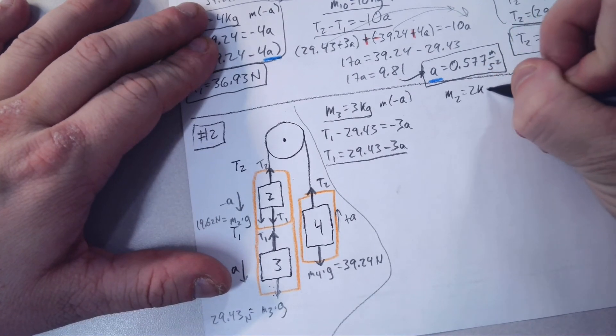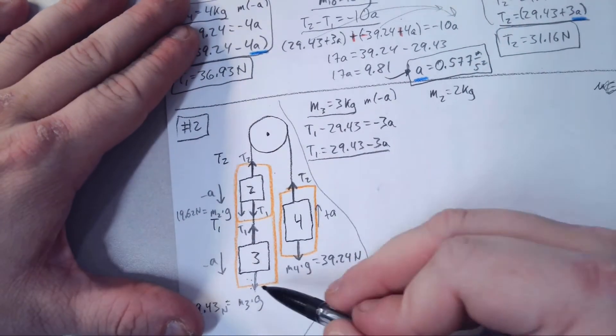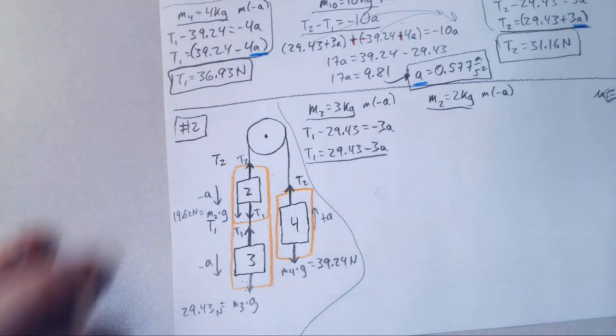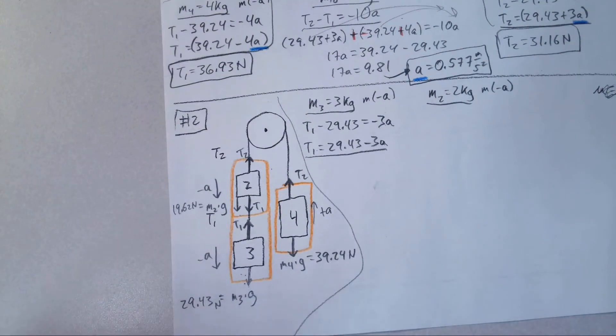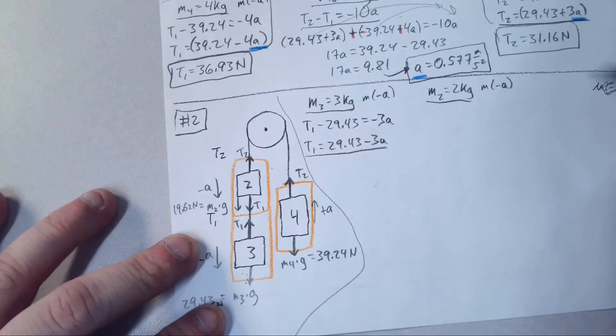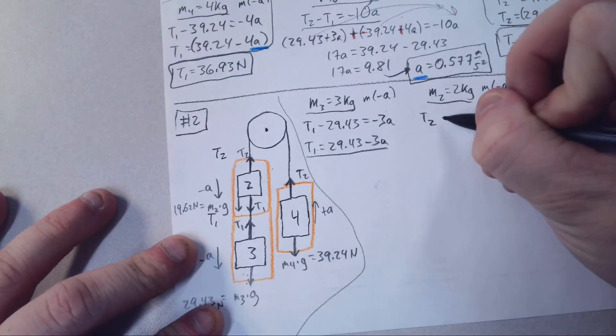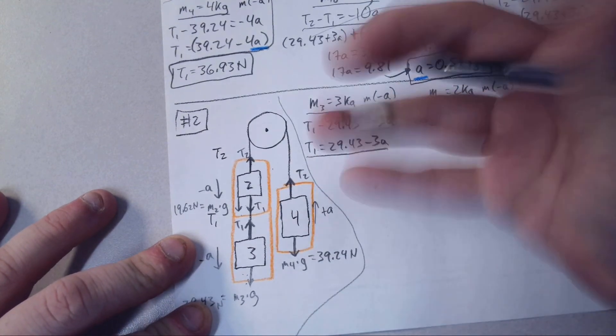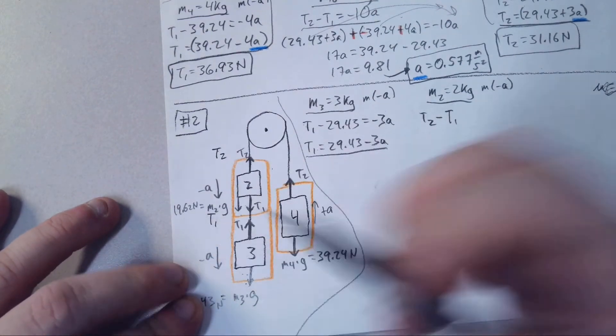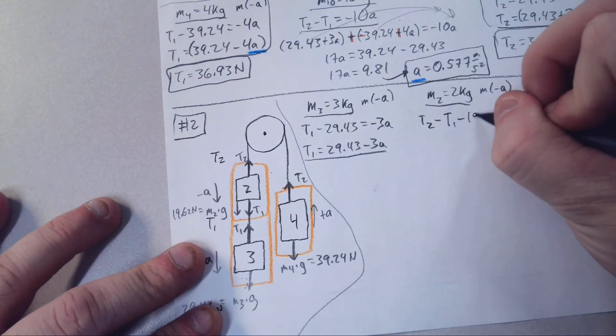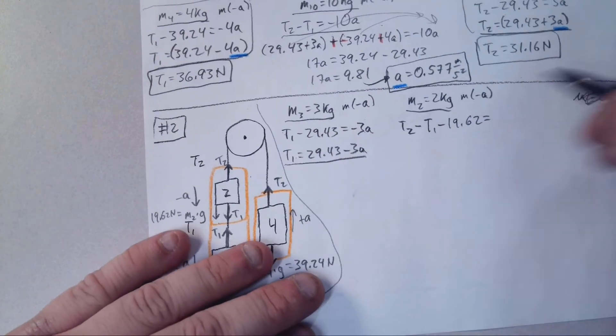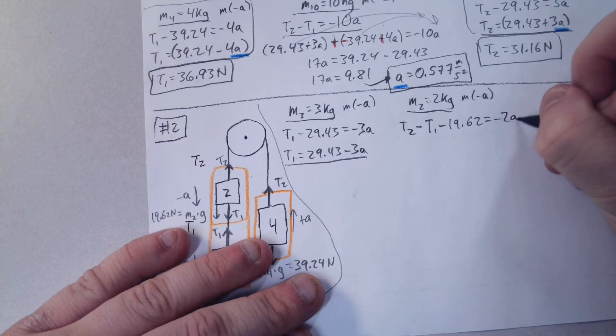M2 is 2 kilograms. This is also going down, so we want to remind ourselves M times negative A. Everything up is added, minus everything going down. So up, we have T2. I'm going to choose to do T1 first, so minus T1. And then also minus 19.62 because it's going down. That equals M times negative A, 2 times negative A, or negative 2A.